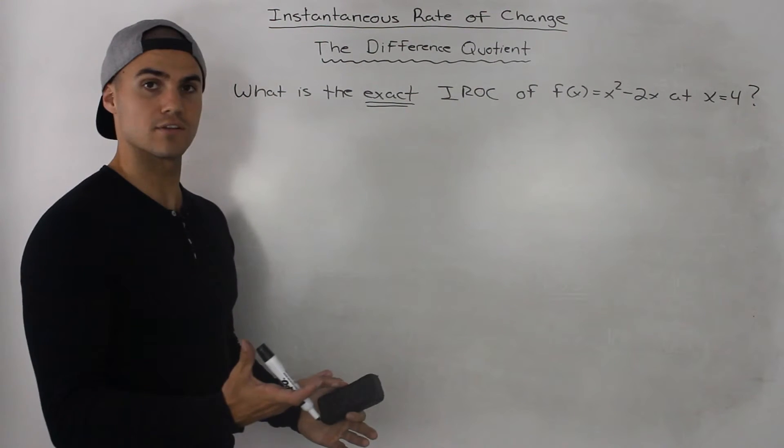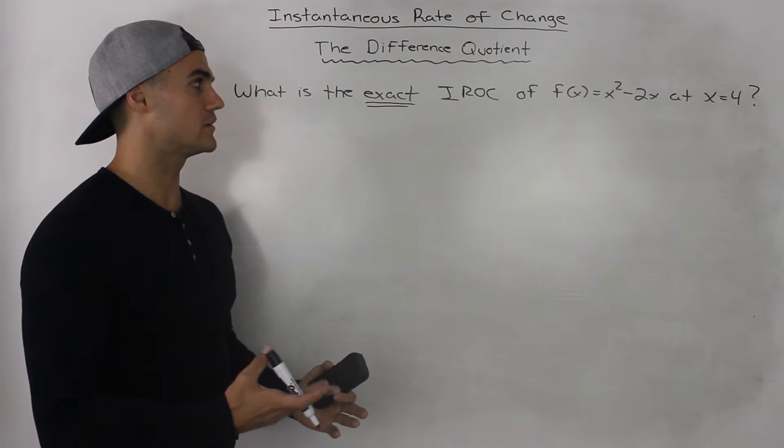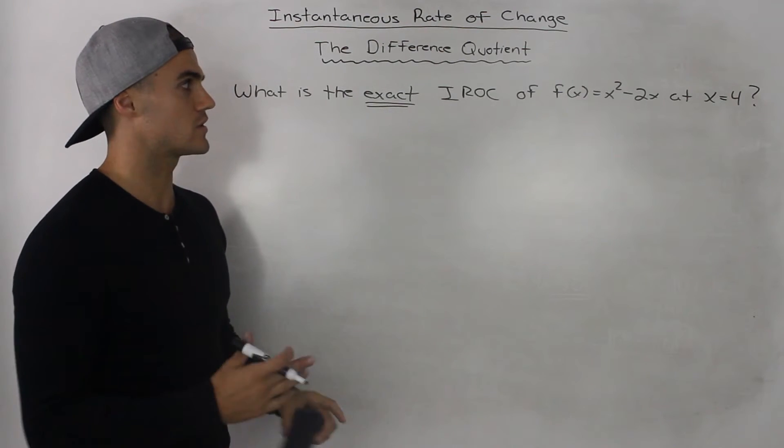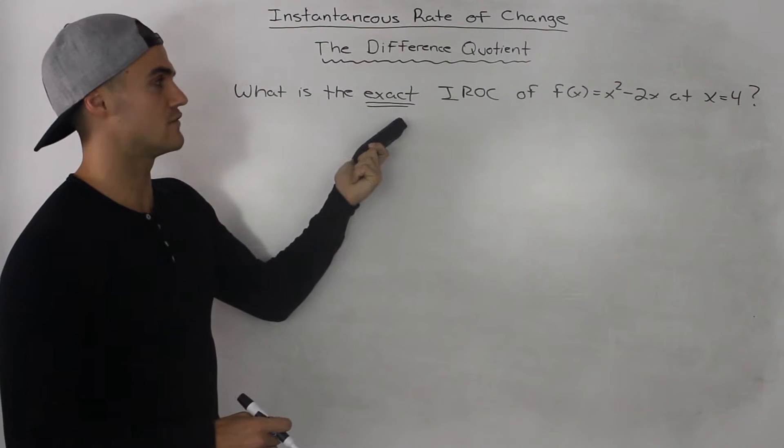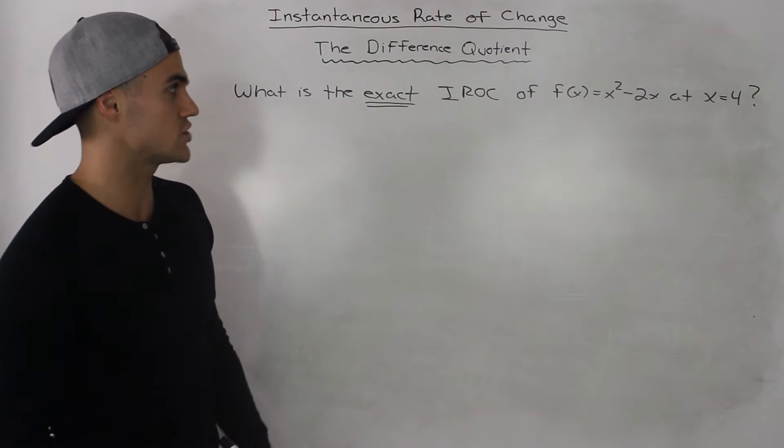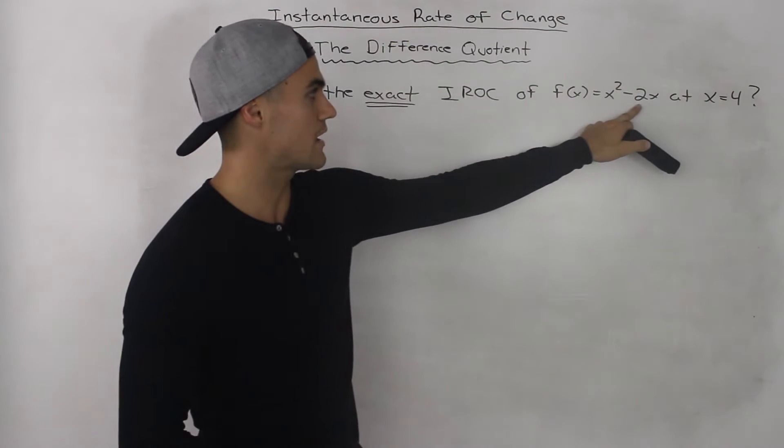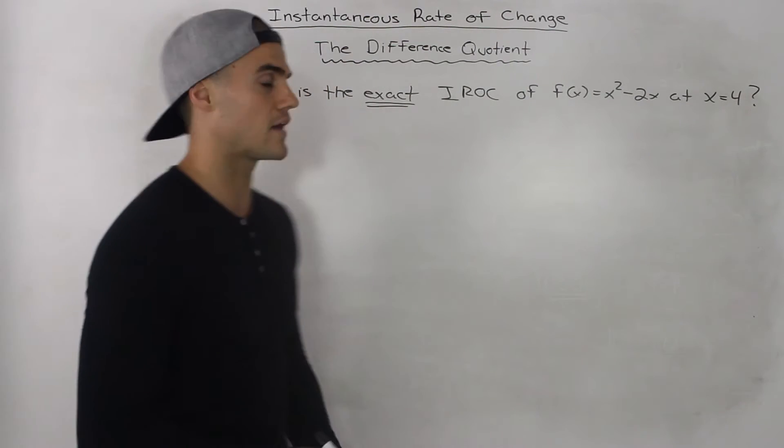All the way up until this time we've been only approximating the instantaneous rate of change with different methods, but now we're going to use the difference quotient to find the exact value of the instantaneous rate of change for this function x squared minus 2x at an x value of 4.